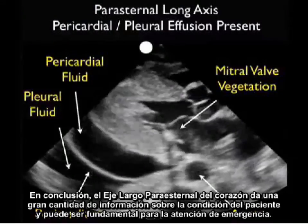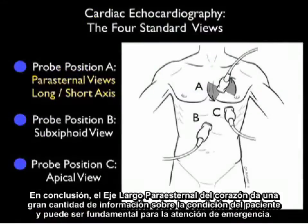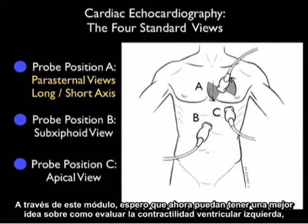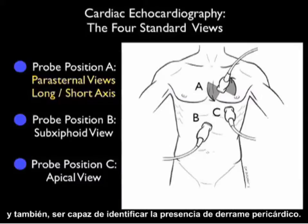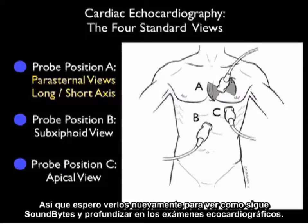In conclusion, the parasternal long axis view of the heart gives a great deal of information about our patient's condition and can be instrumental in emergency care. Through this module, I hope you now have a better idea of how to grade left ventricular contractility from good through poor, and how to identify the presence of a pericardial effusion. I hope to see you back as SoundBytes continues and we look further at the cardiac echocardiography examinations.